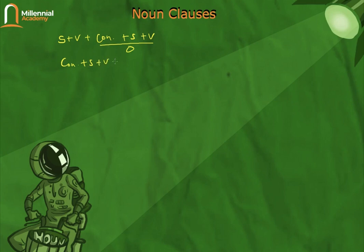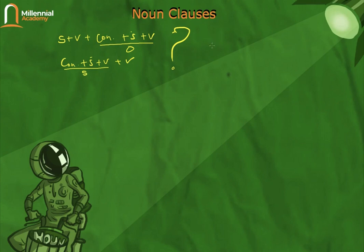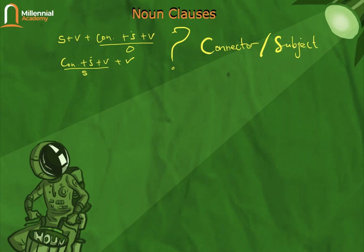When the noun clause functions as a subject, the structure becomes subject-verb plus verb. Now, I had explained that after a connector there must always be a subject — but the question is, does there always have to be a subject after a connector? It turns out, not always, because some connectors can function simultaneously as both connector and subject of the noun clause.